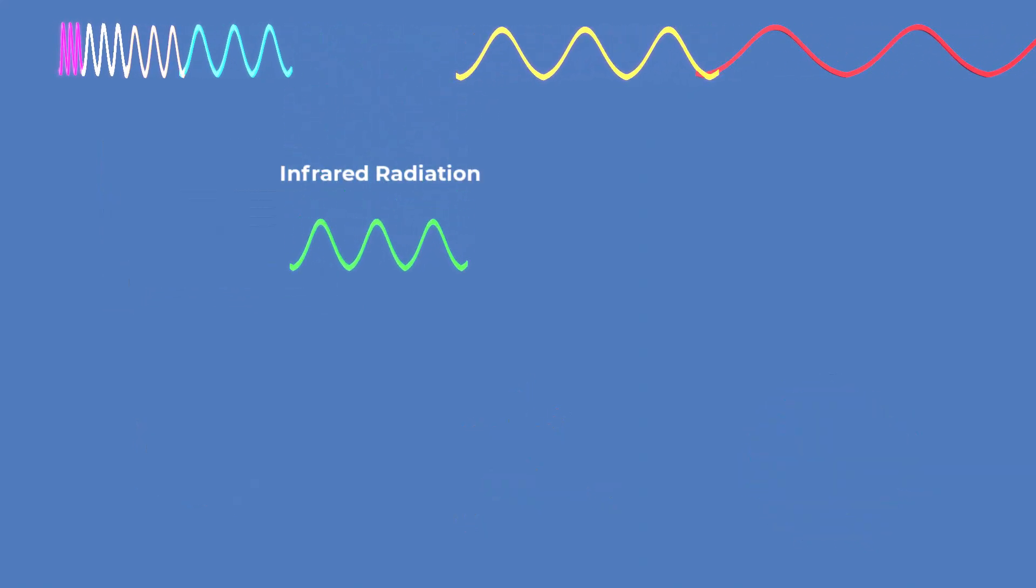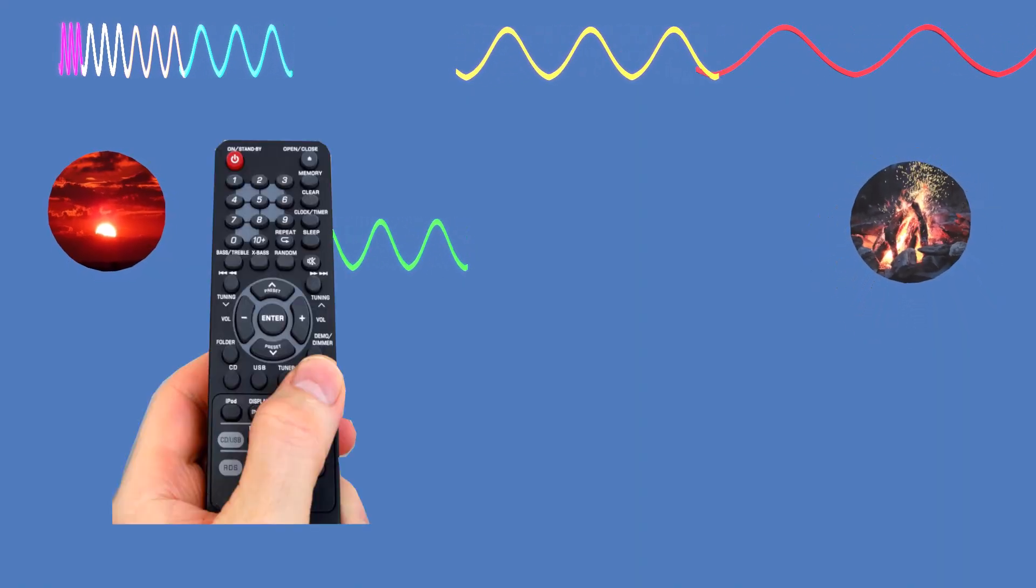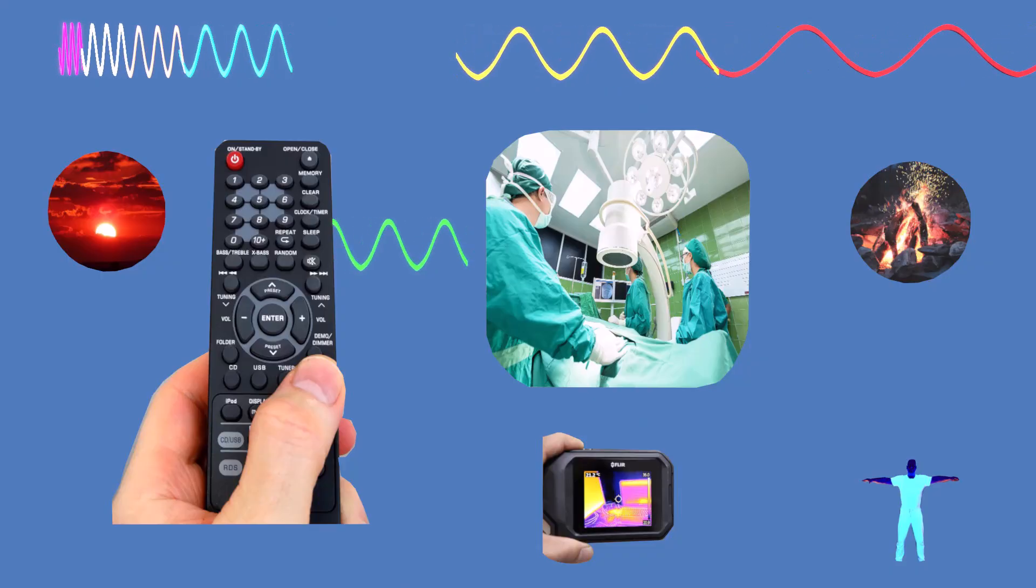Infrared radiation lies next in the spectrum. It is mainly associated with heat, which we can feel as warmth from the sun or a fire. Infrared is used in remote controls, thermal imaging, night vision devices, and medical treatments.